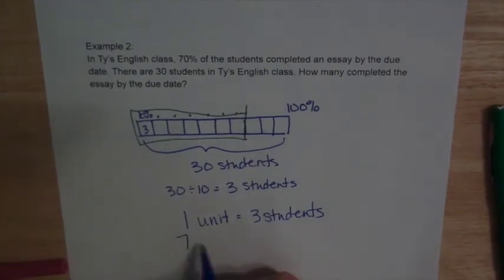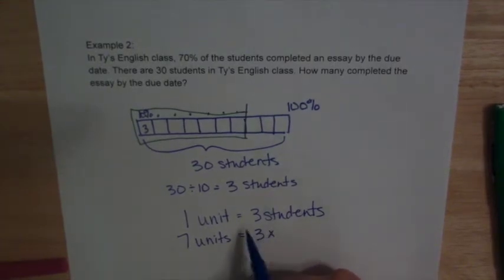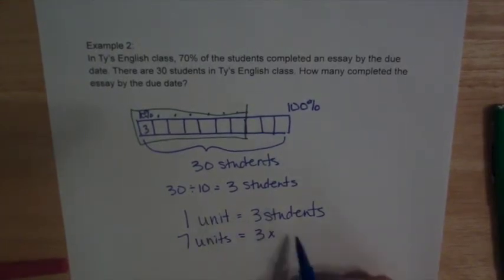So we want 7 units. So we're going to take our 3 students per unit times our 7, which equals a total of 21 students.